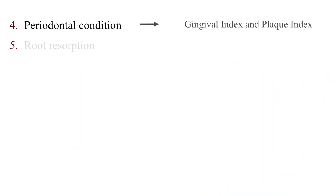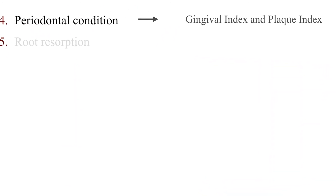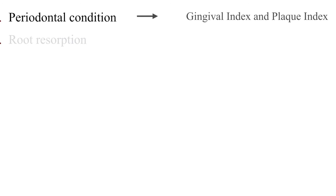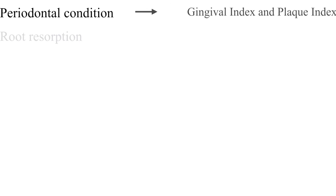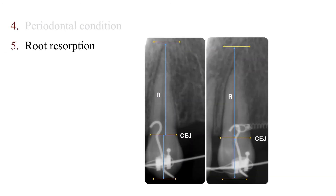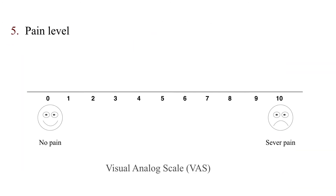The gingival index and plaque index were used to measure periodontal condition. Periapical X-ray was used to measure root resorption. A visual analog scale was used to measure pain level.